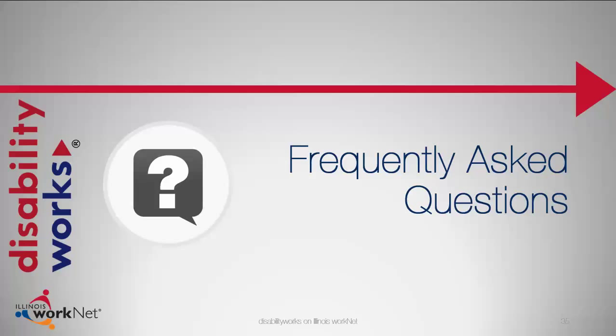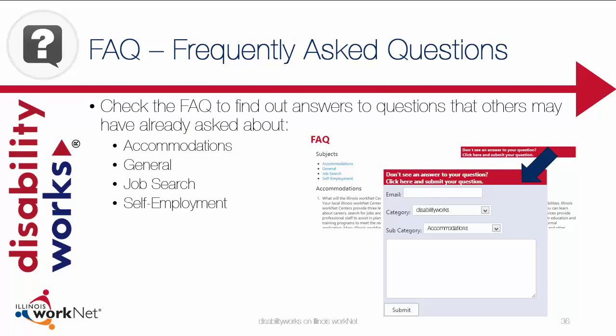We offer a Frequently Asked Questions section, or FAQ. In our FAQ section, you can find answers to questions about things like accommodations, job search, or self-employment. If your question is not already in the list, there is a red box that gives you the opportunity to ask your own question by category. If your category is not there, just include it in the first line of the comment, then ask your question. We will find the correct answer to your question and then share it for others to see.